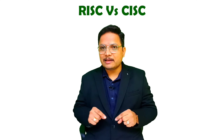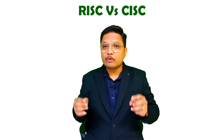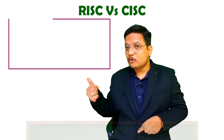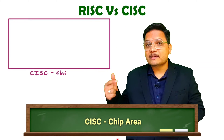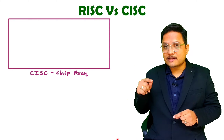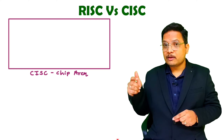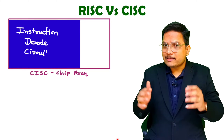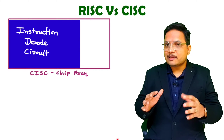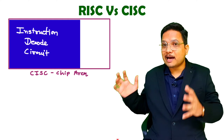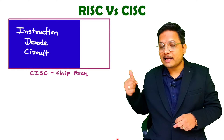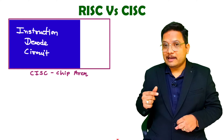Before I explain you the basic comparison, let me show you first how both of these architectures cover chip area. Here let me explain you first how the CISC chip is covering area with its architecture. If you observe the chip of CISC, you will be observing that you are having complex instructions and the number of instructions will be more. So obviously, the instruction decode circuit will be large in its chip area. You can observe how the instruction decode circuit is there with that CISC architecture.